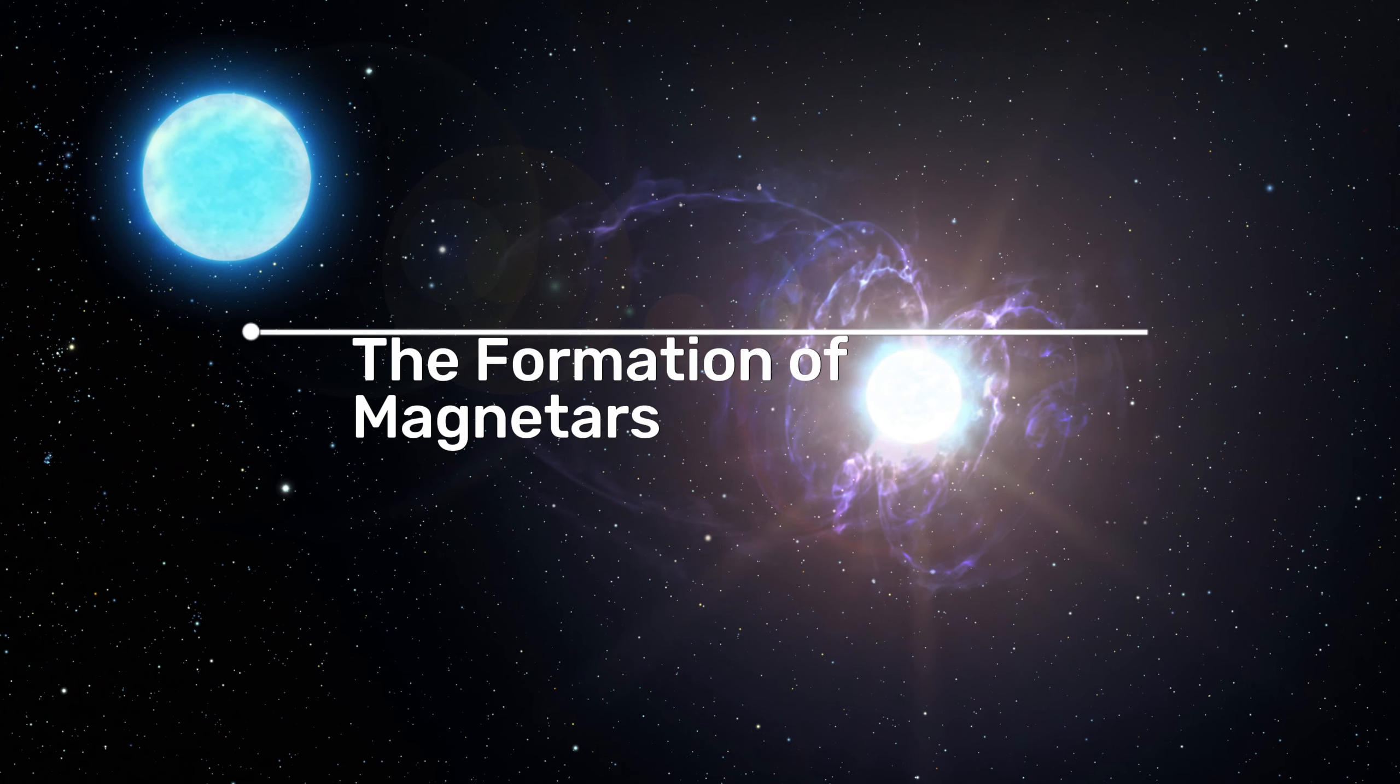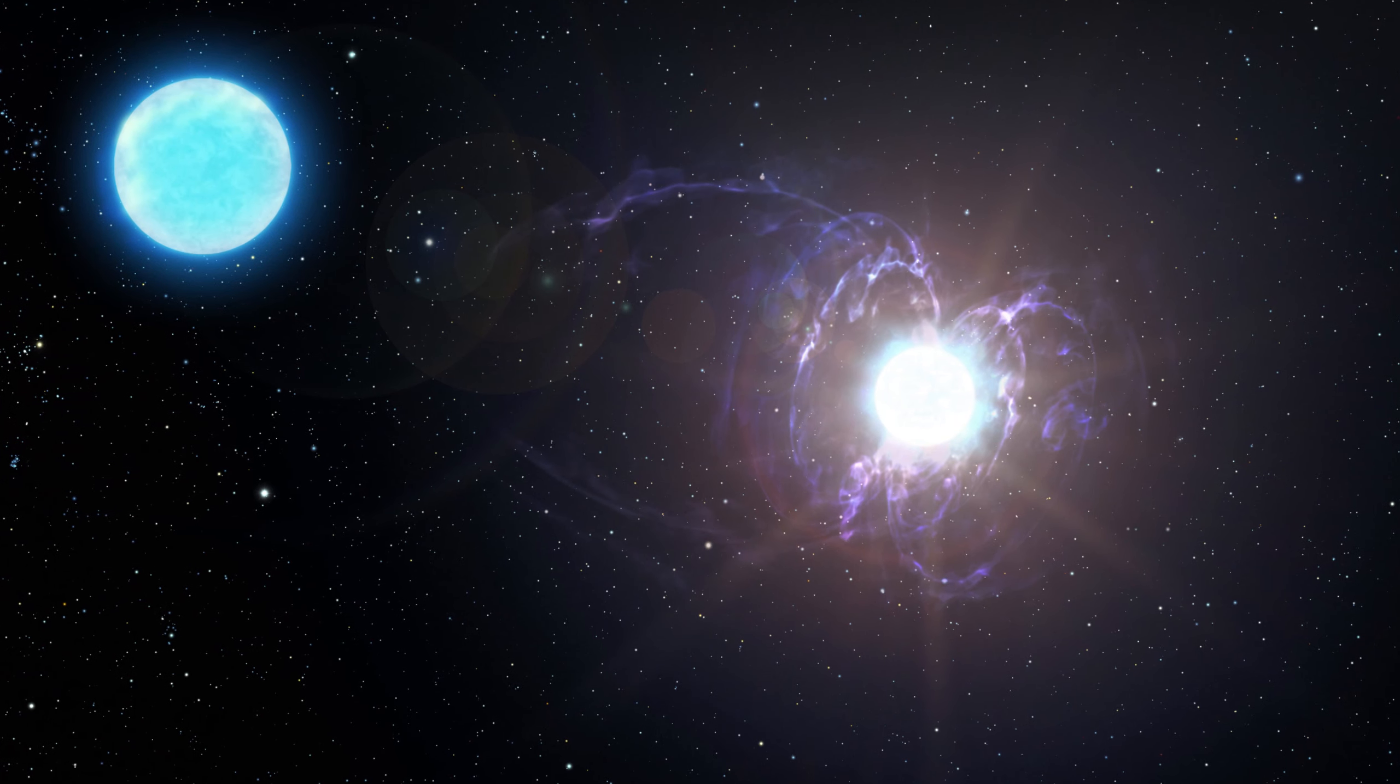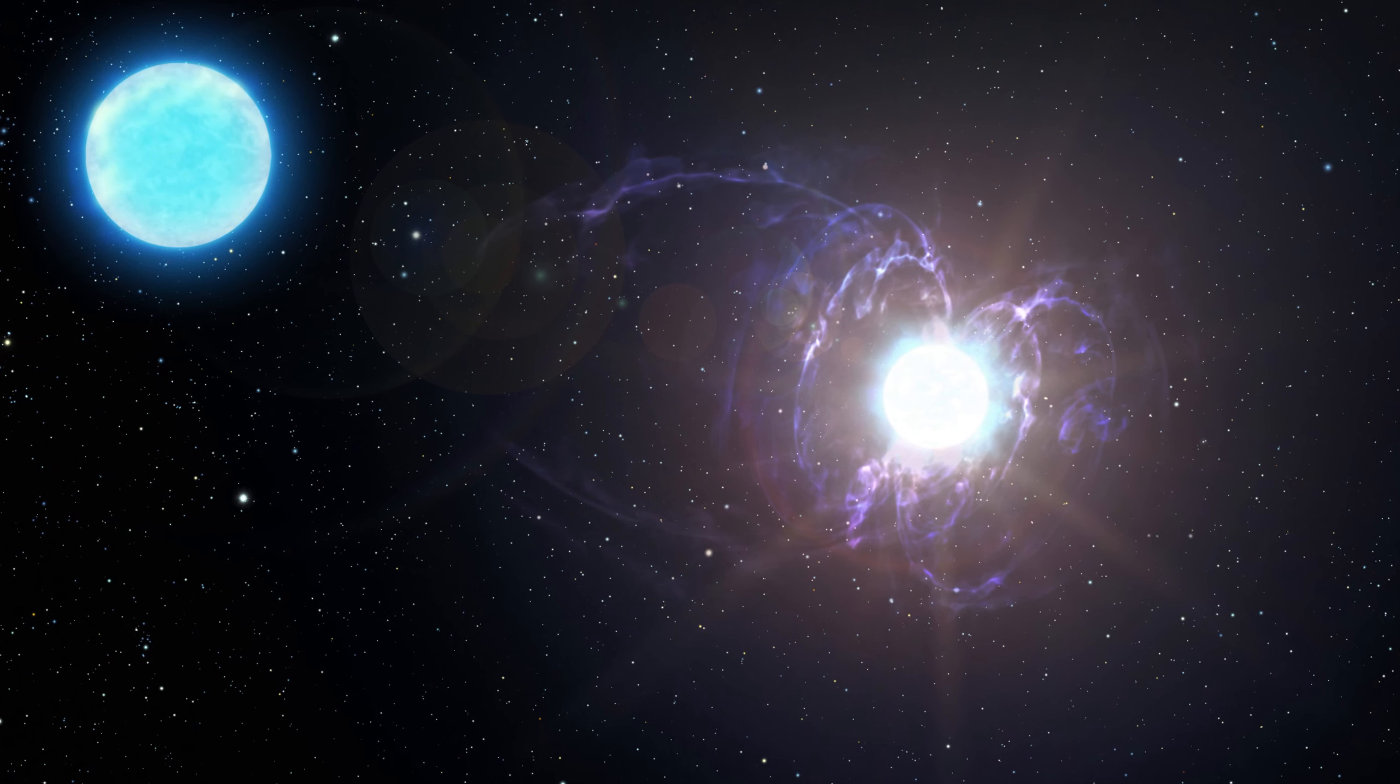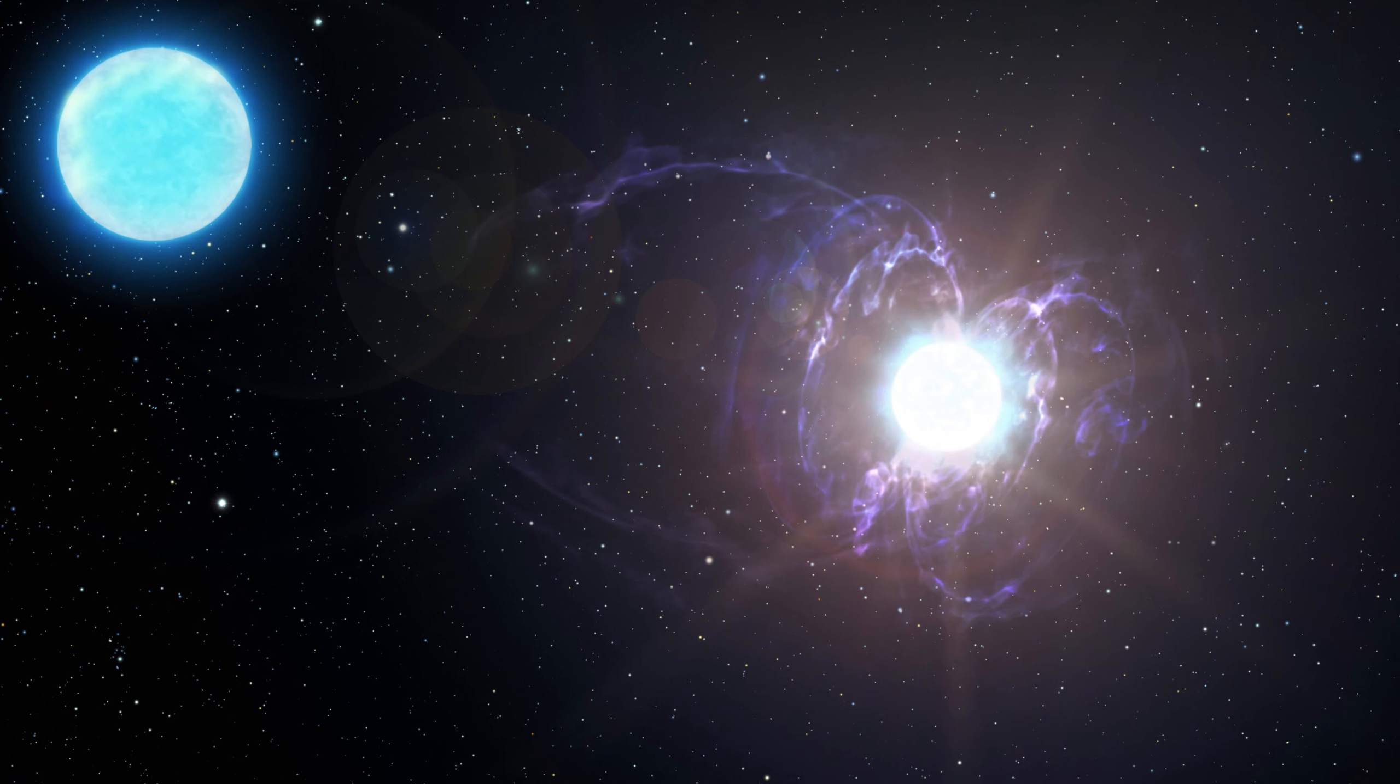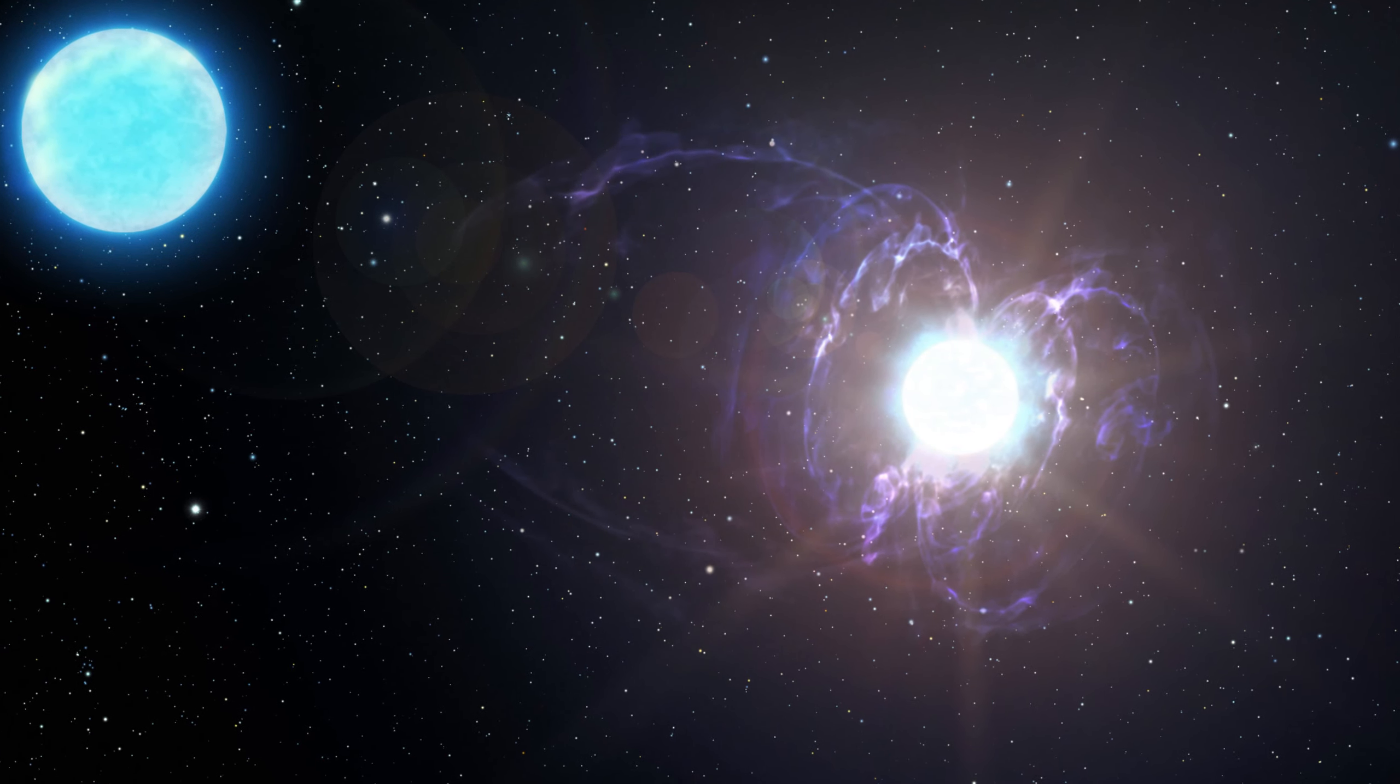The Formation of Magnetars. Magnetars are formed when a star at least eight times the mass of our sun explodes in a supernova. The core of the star collapses under its own gravity, forming a neutron star. If the conditions are right, this neutron star can become a magnetar.